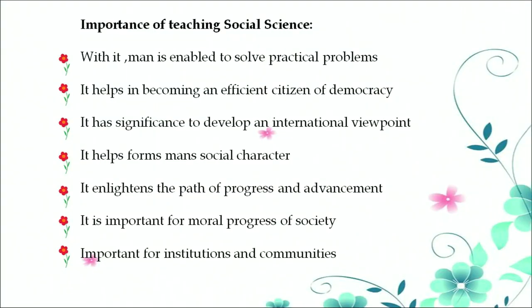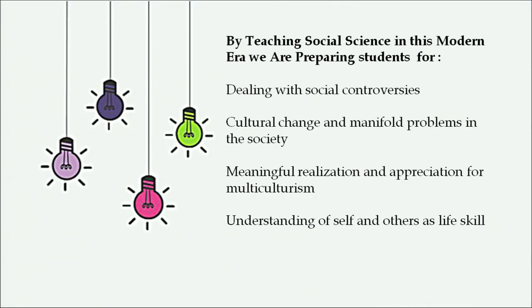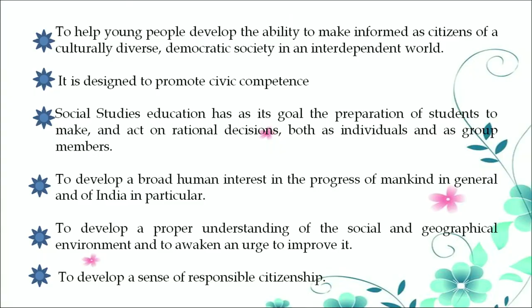These aims can be achieved because social science helps man solve practical problems and become an efficient citizen of democracy. It develops an international viewpoint, forms social character, and enlightens the path of progress and advancement. It is important for the moral progress of society and for institutions and communities. By teaching social science in this modern era, we are preparing students for social controversies, cultural change, multiculturalism, and promoting the ability to make informed decisions as citizens of a culturally diverse democratic society.